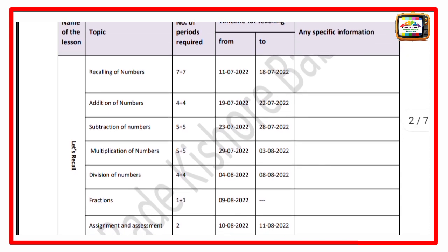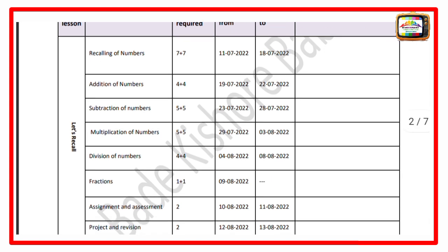The number of periods required for each topic are: 7 plus 1, 4 plus 4, 5 plus 5, 5 plus 5, 4 plus 4, 1 plus 1, and 2.